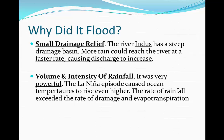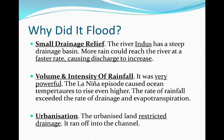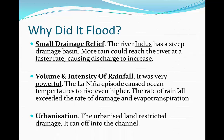Also, the volume and intensity of rainfall was very powerful. In a La Niña episode, the ocean temperatures rose even higher, so as a result there was a lot of rain, not just from the monsoon, but from all these different climatic events happening at the same time. A lot of rain flooded that river, which exceeded the rate of infiltration. Also, Karachi is relatively urbanised, so a lot of the land restricted drainage and as a result the rain ran off into the channel.